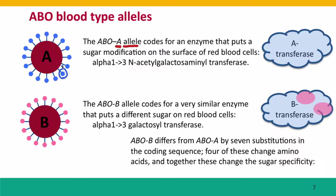The B allele is very similar, but it codes for an enzyme that puts a different sugar on. The B allele differs from the A allele by seven substitutions in the coding sequence — that's seven changes to the base pairs. Four of these changes change the amino acids, and the other three are silent substitutions that don't change the amino acid.